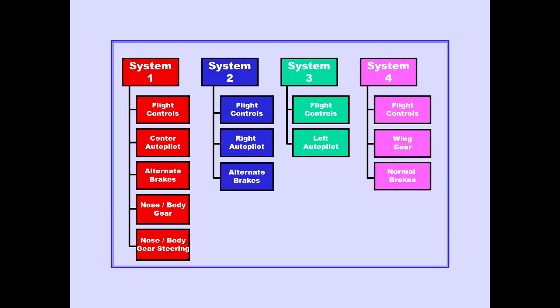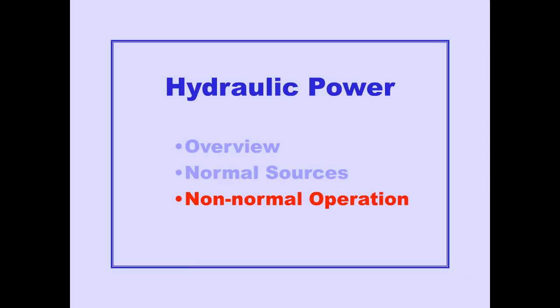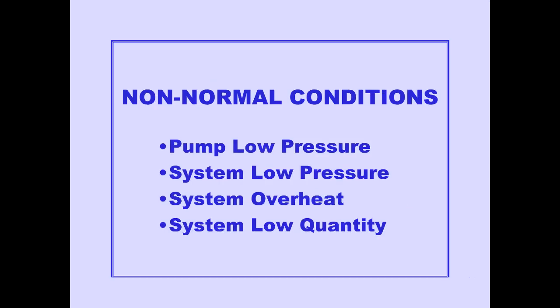This completes our discussion of the normal sources of hydraulic power for the four hydraulic systems. We will now discuss non-normal operation. Our discussion will cover four types of non-normal conditions: pump low pressure, system low pressure, system overheat, and system low quantity. Let's begin with pump low pressure.